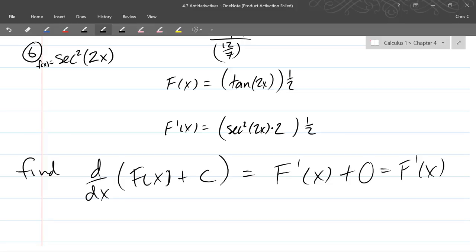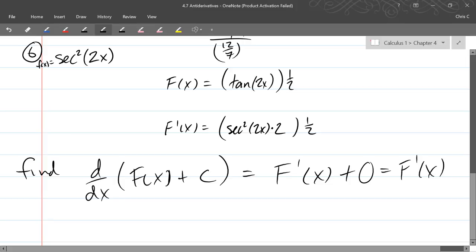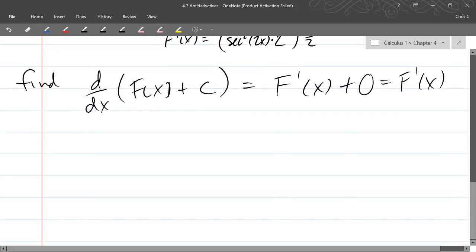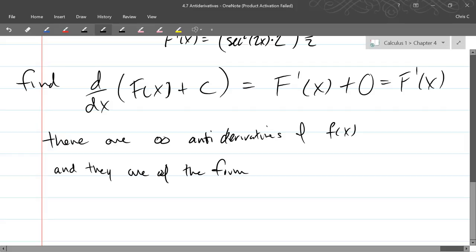So antiderivative, there's actually an infinite number, and it's the antiderivative plus some constant. So you can't really say the antiderivative, you have to say an antiderivative. So there are infinite antiderivatives of any function f of x. And they're of the form, we'll use capital F. So that part doesn't change, but your constant, you don't know what the constant is.